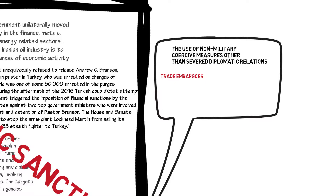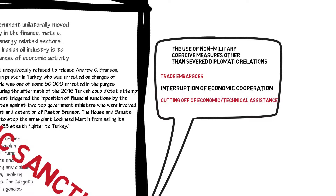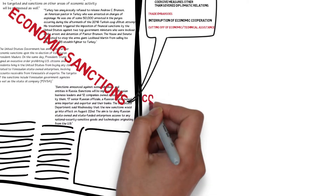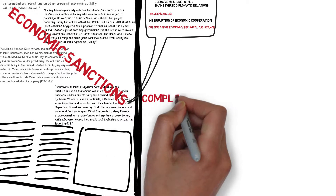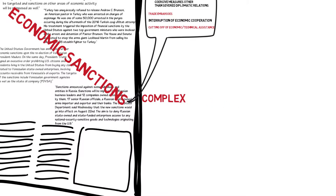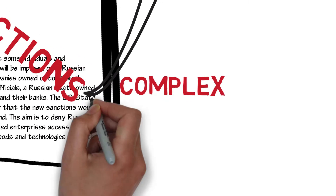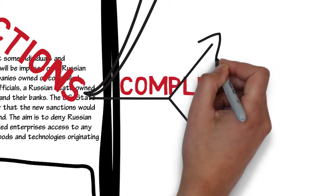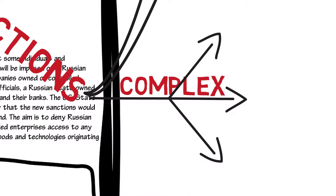In general, common practices include the imposition of trade embargoes, the interruption of economic cooperation, and the cutting off of economic or technical assistance. The United States economic sanctions regime is very complex and has a large number of targets. These can be grouped into specific countries, specific industries or goods, and specific individuals or entities.